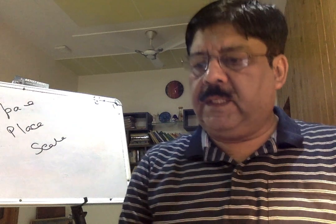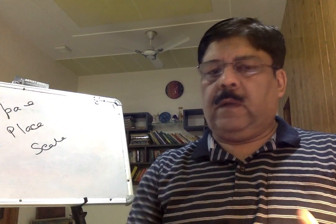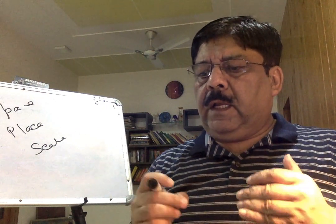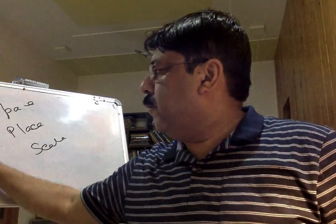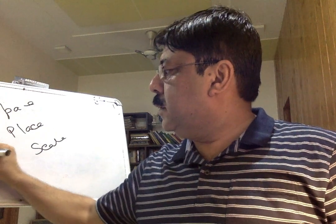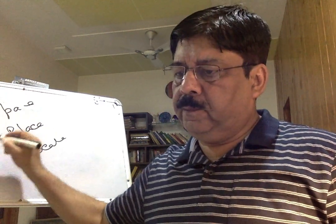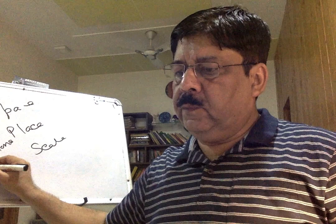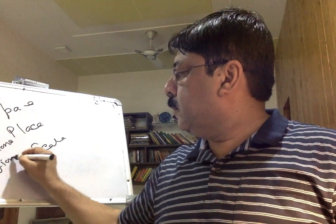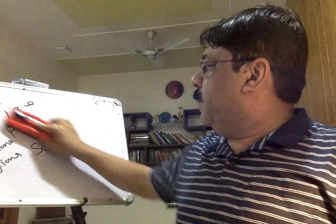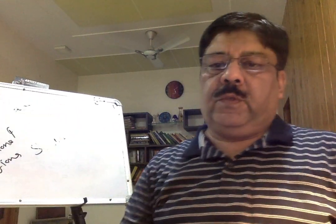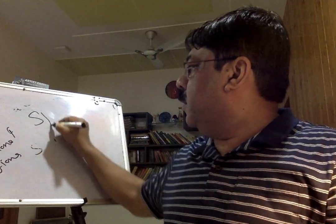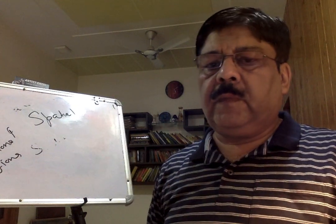We will talk about what space is, what place is, and what scale is in human geography. There are attributes of location, conditions, connections, and regions. All these together make attributes. When we think of these, we think of spatial. Geography is a spatial science.